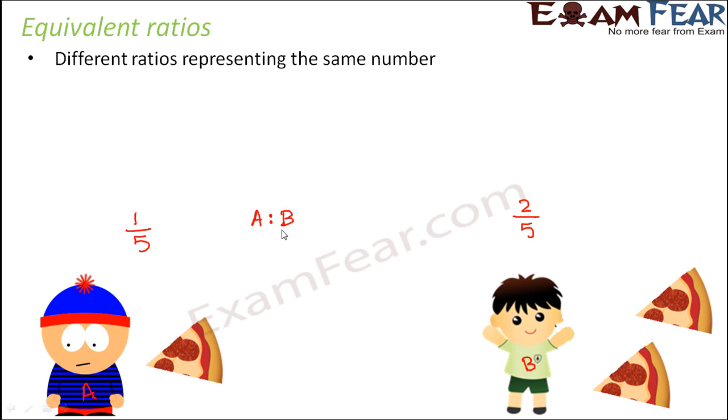So the ratio of pizza eaten by A to B, how would you find that? So A is to B would be 1/5 divided by 2/5.